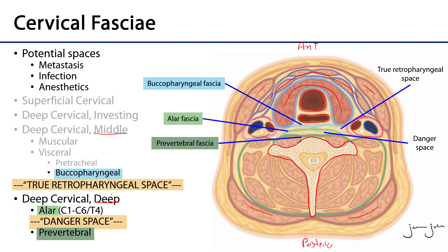Fascial spaces generally — not always, but generally — are potential spaces. They're layered upon one another, and from time to time infections can spread, various tissues can metastasize into these spaces, anesthetic agents when injected into a potential space can spread, and even air can move in a potential space.